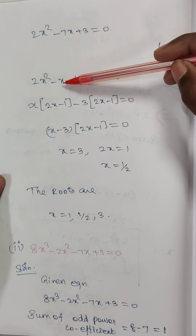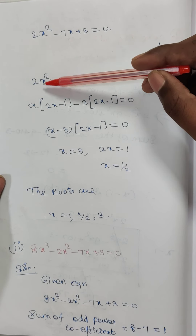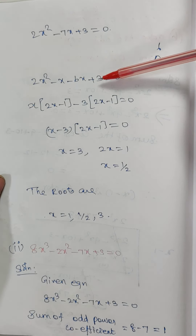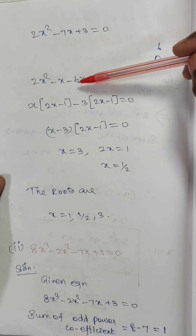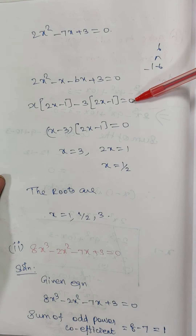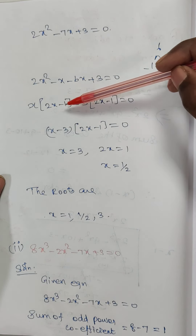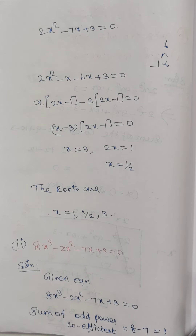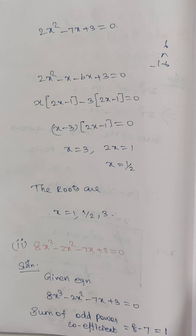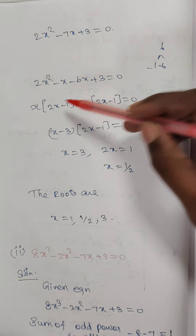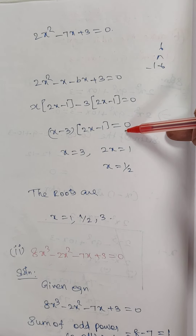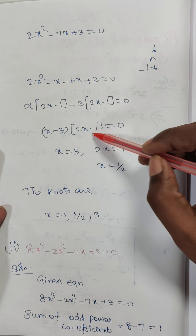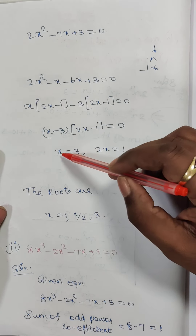Taking x common from the first two terms gives x times (2x minus 1), and taking minus 3 common from the last two terms gives minus 3 times (2x minus 1). Since (2x minus 1) is the common factor, the factored form is (2x minus 1)(x minus 3) equals 0.